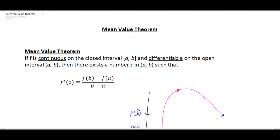Here we have the Mean Value Theorem, and you're going to find this is similar to Rolle's Theorem — this is an existence theorem, and actually Rolle's Theorem is used to prove the Mean Value Theorem. The theorem states that if your function f is continuous on the closed interval a to b and differentiable on the open interval from a to b — you're going to see this quite a lot with theorems throughout calculus.